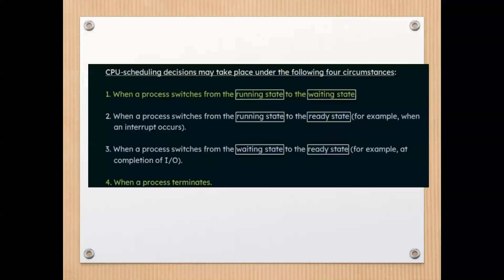Scheduling algorithms are available under primitive and non-primitive mechanisms. CPU scheduling decisions may take place under the following circumstances: first, when a process switches from the running state to the waiting state — either because an interrupt occurs, the process requires some input-output, or its execution time has ended and it switches back to the waiting state.